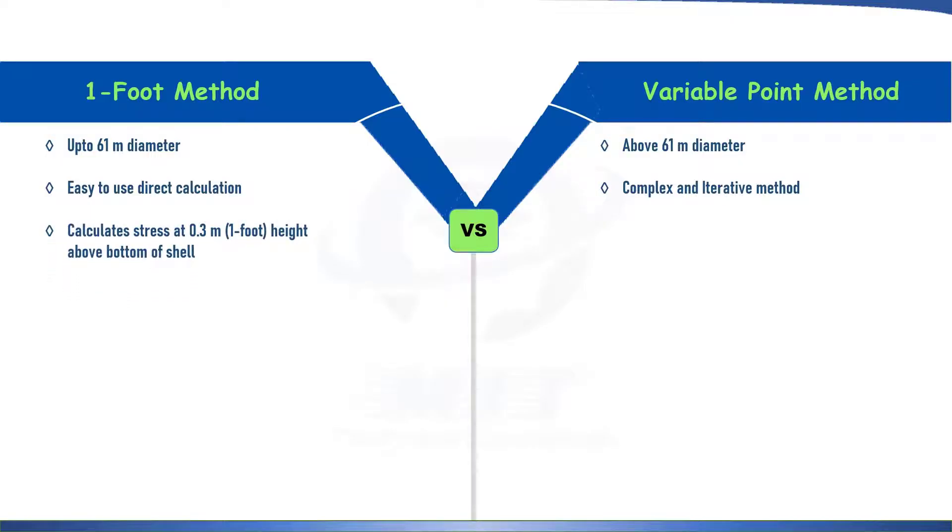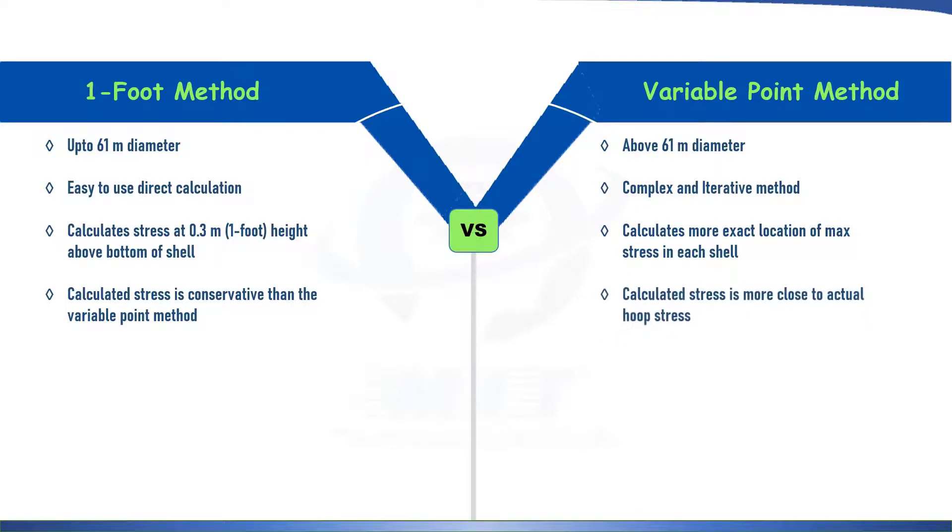One foot method calculates maximum stress at 0.3 meter or one foot height above the bottom of each shell. And in variable point method, we calculate more exact location of stress in each shell. And thereby, calculated stress is conservative in one foot method than variable point design method. And the stress calculated as per variable point method is more close to actual hoop stress.